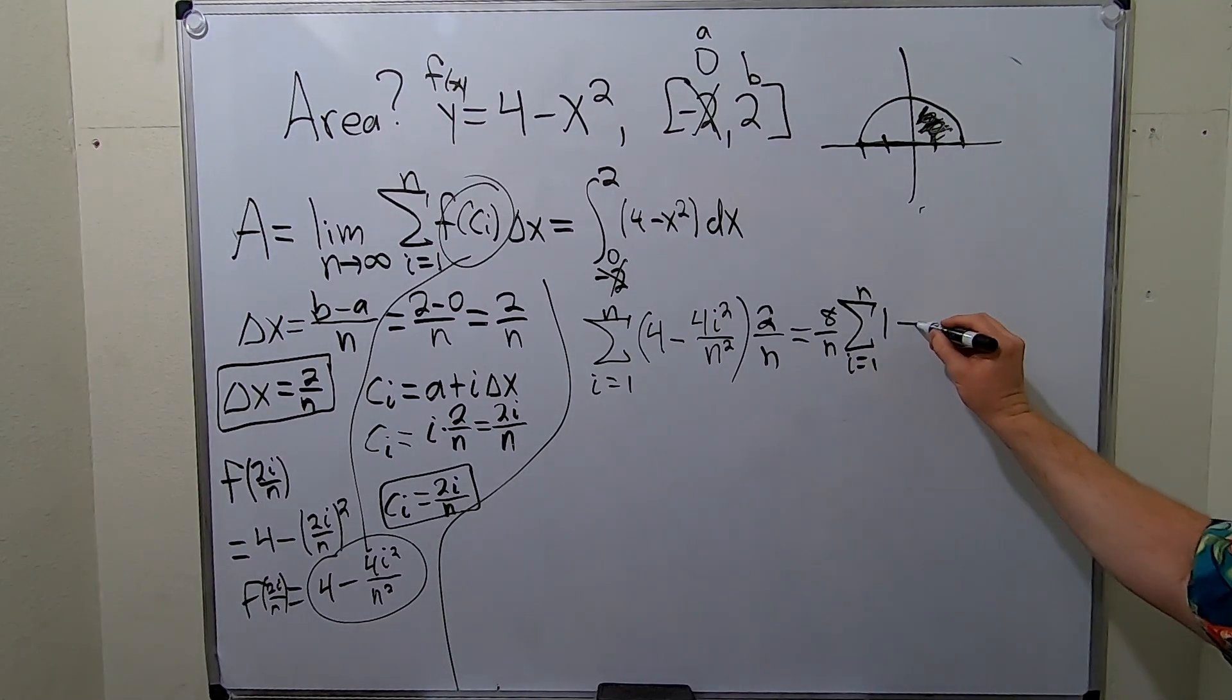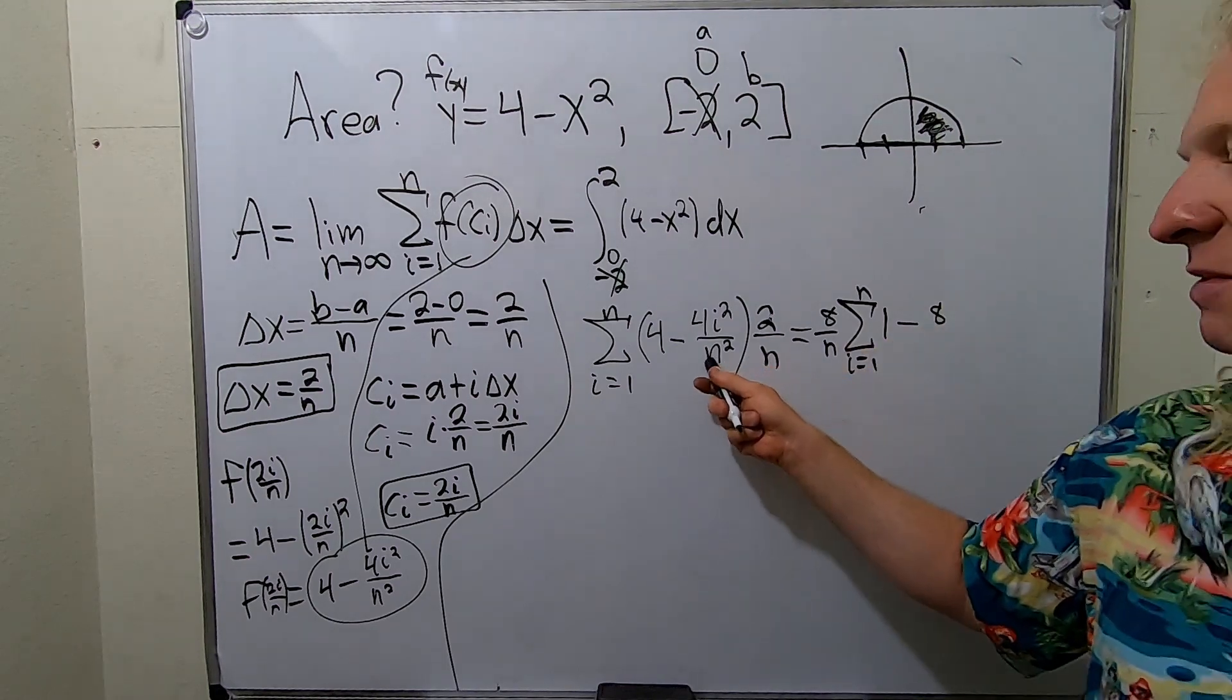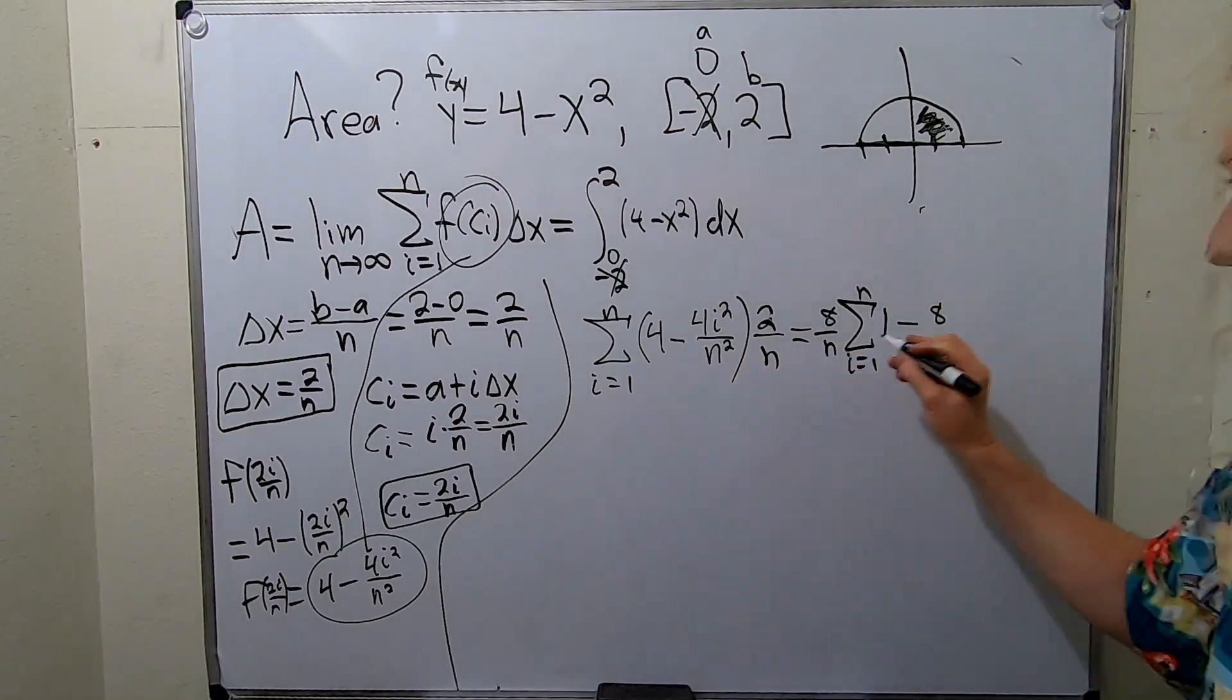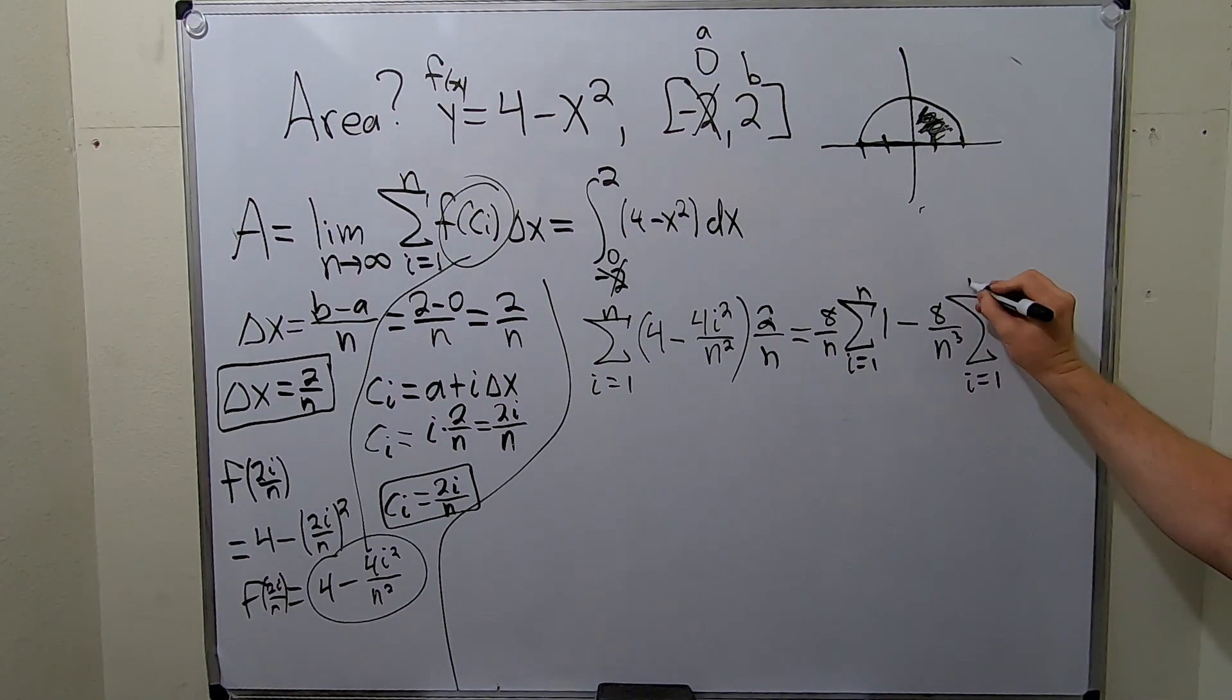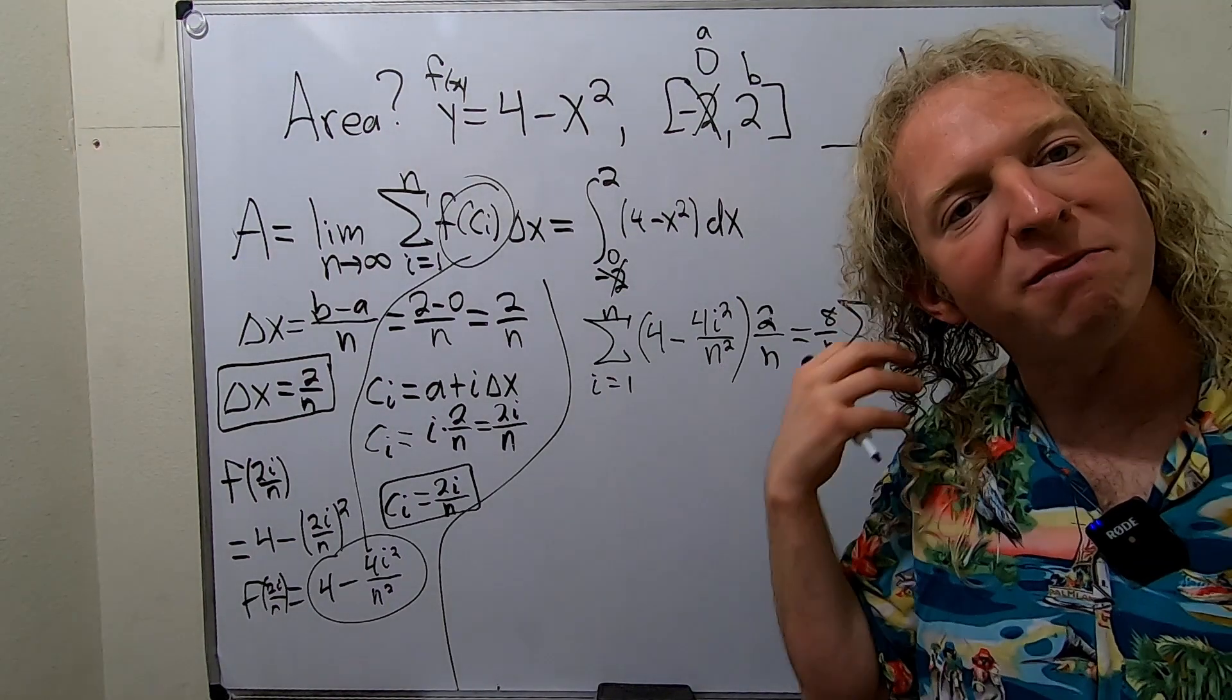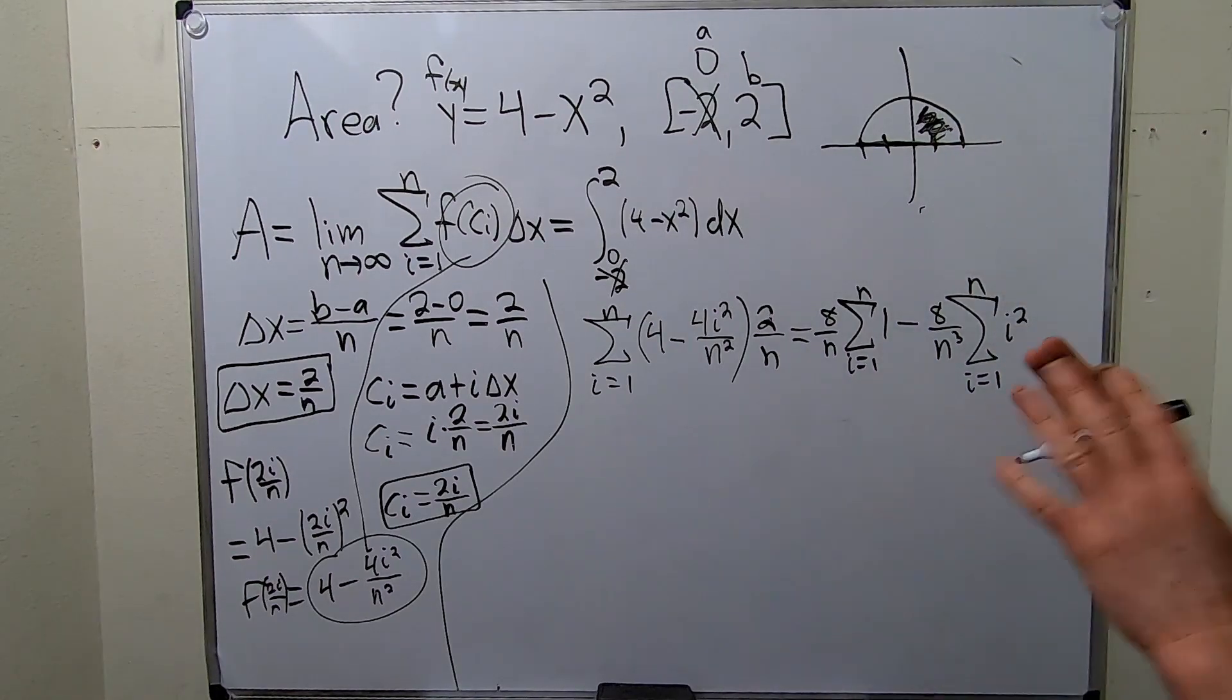And then minus 2 times 4 is 8. So you get 8. n times n squared is n cubed. So you get n cubed. And again, if it doesn't have an i, just pull it out. Okay, so this is i squared. So super key. You can show a million steps here, but it's just not worth it. It's always better just to do it in one step.